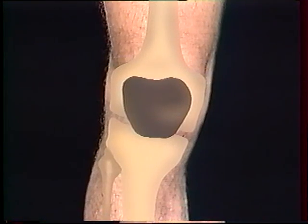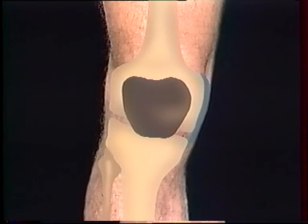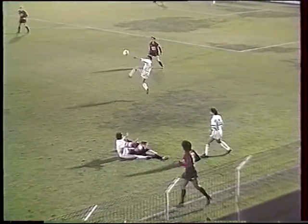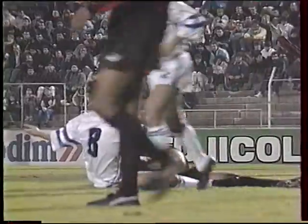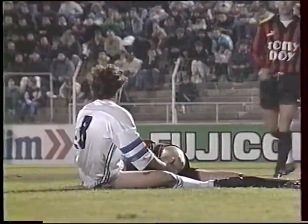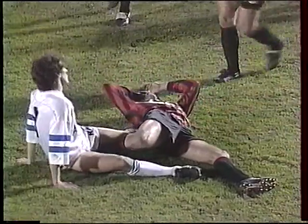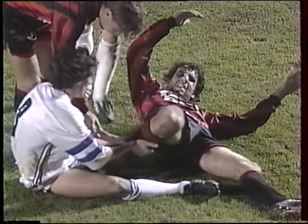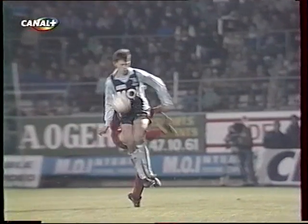Les ligaments latéraux, internes et externes, assurent la stabilité du genou. Ils sont détendus pendant la flexion, mais fortement tendus lors de l'extension. C'est dans cette position qu'ils sont le plus vulnérables. Les tacles sont une cause fréquente de la distension de ces ligaments. C'est la fameuse entorse du genou.